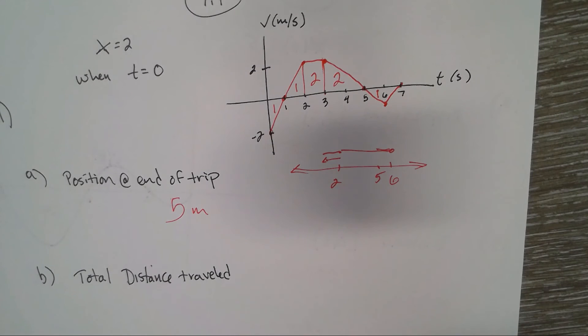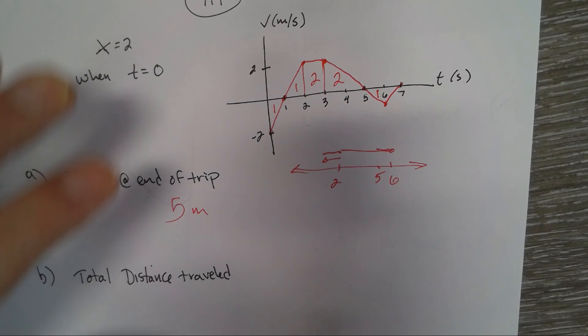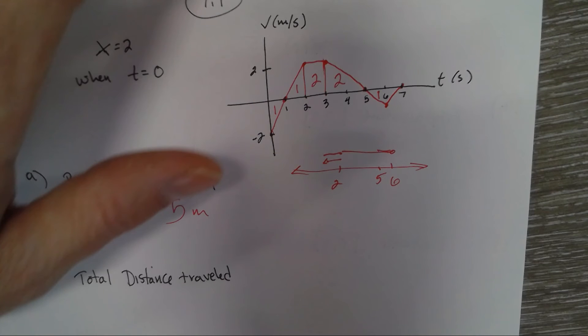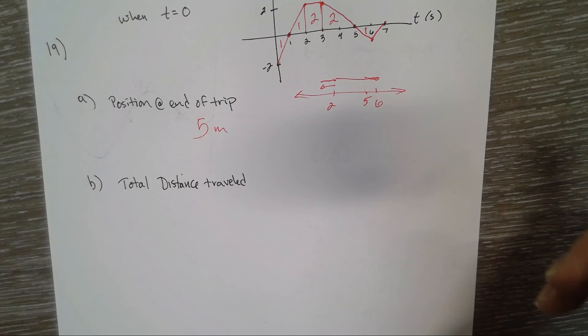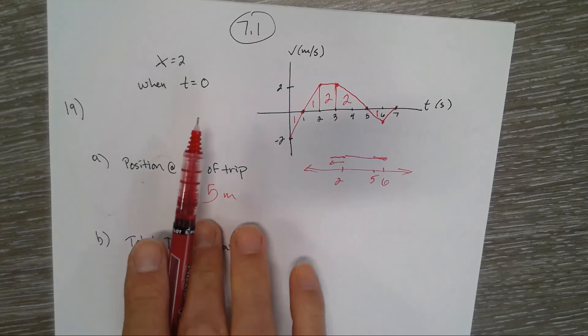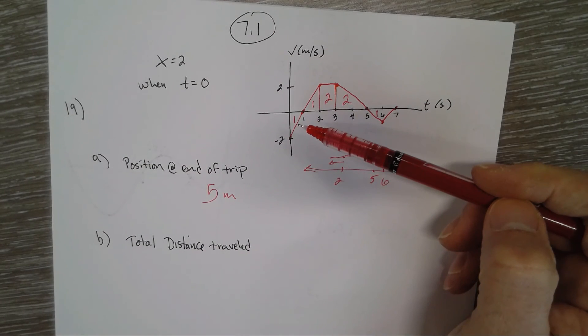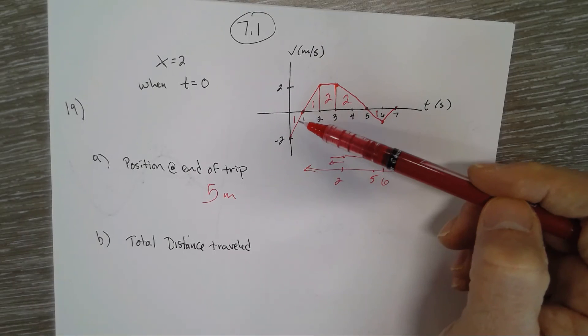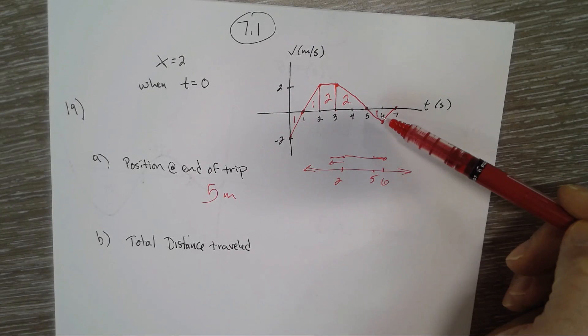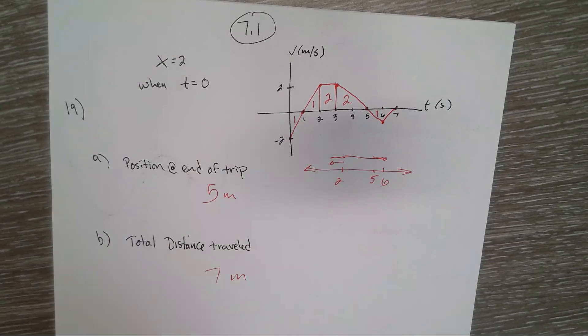For the total distance traveled, x equals 2 is not important. We just want to know how far it traveled - going left or right doesn't matter. So 1, 2, 4, 6, 7 - it traveled 7 meters.